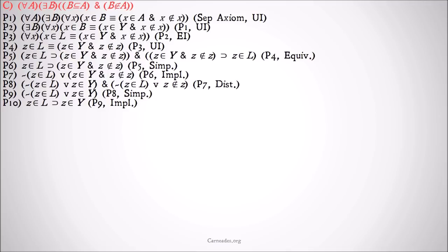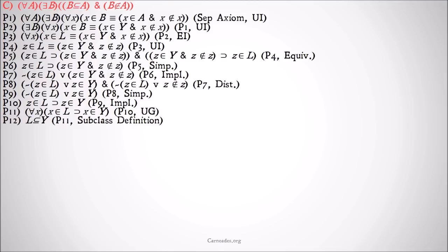We'll distribute across the conjunction and get two different parts, each of which is a disjunction on its own. Then we'll simplify premise eight and take premise nine and do implication on it — turning it back into an implication. Then we're going to universally generalize it. The z and y can be universally generalized because we universally instantiated them to begin with. We've just proven that for all x, if x is a member of l, then x is a member of y — which matches the definition of subclass. l will existentially generalize back into b and y will universally generalize into a, so this is the first half.